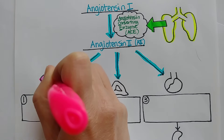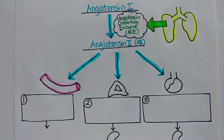Specifically, arterioles are the key target here because they're the ones that have the biggest impact on raising peripheral resistance to increase blood pressure.